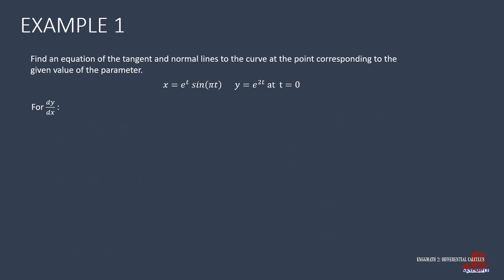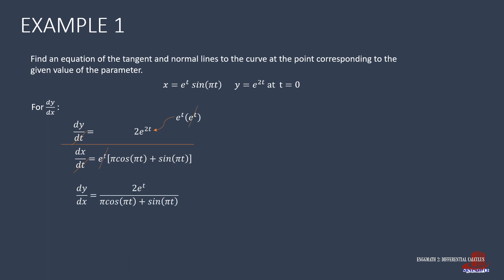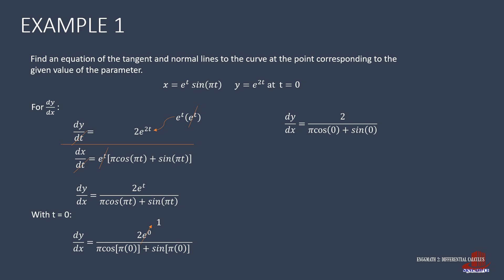For the slope dy/dx, we divide dy/dt by dx/dt to cancel out the dt's. We can break down e^(2t) into e^t · e^t in the numerator, canceling one factor with the denominator, simplifying the slope to: dy/dx = 2e^t / [π·cos(πt) + sin(πt)]. Placing t = 0 gives 2e^0 / [π·cos(0) + sin(0)] = 2 / [π·1 + 0]. Since e^0 = 1, dy/dx = 2/π.